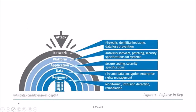In the detailed view of these layers, an attacker coming from outside must first interface with the network layer, which involves the firewall and DMZ zone. If they pass through that, they reach the platform layer, which includes antivirus and security configurations. Passing that, they reach the application layer, which involves secure coding, security specifications, and configuration of application and database server software.